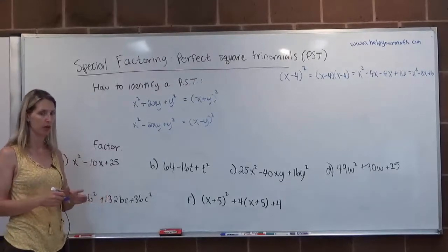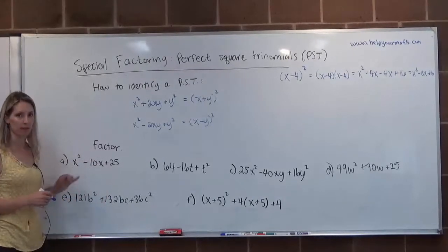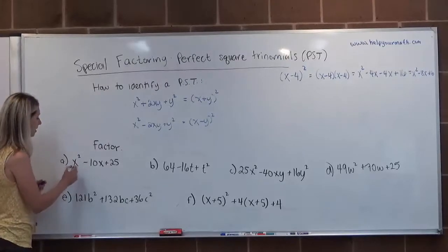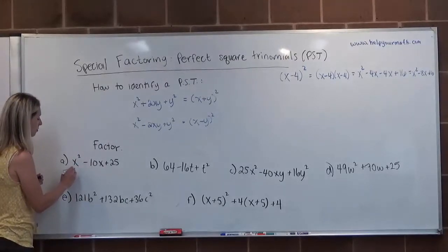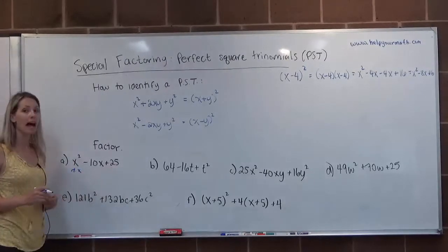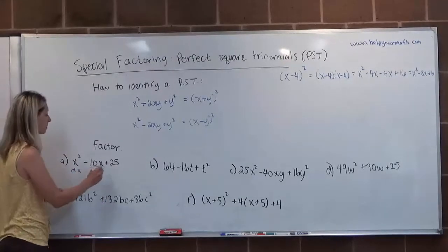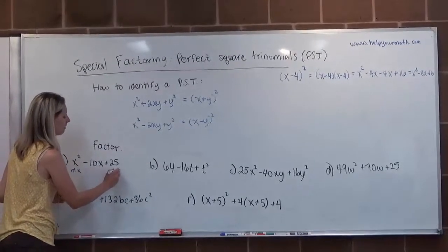So here's what we do. We want to make sure it's a perfect square trinomial. Is the first term a perfect square? And we say yes, it is. Its root is x. Is the last term a perfect square? Yes, 25 is a perfect square. It has a root of 5.